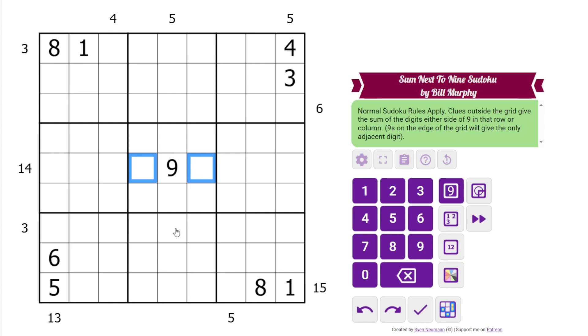So this 14 is telling us that these two digits sum to 14, because the 9 is in the middle. This 5 is telling us that these two digits sum to 5. And a 9 could be on the edge, so for example if there was a 9 here, this clue would be telling us that this digit is 6, because it's the only digit next to 9. And those are the rules.